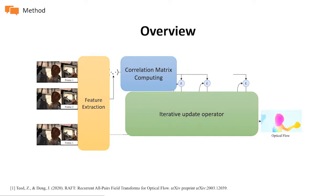Let's dive into the method of RAFT. Here is the overview of the network. We want to predict the optical flow from frame 1 to frame 2, and RAFT can be distilled down to three stages. First is feature extraction, where features are extracted from the input images using convolutional network encoders. Next, we have correlation matrix computing, where visual similarities between all pairs of pixels are computed by constructing a full correlation volume. After that, we have the iterative update operator, which estimates a sequence of flows f1 to fn by looking up this visual similarity matrix. It outputs a delta f each time to refine the current estimate of the flow. All stages are differentiable and can be composed into an end-to-end trainable architecture.